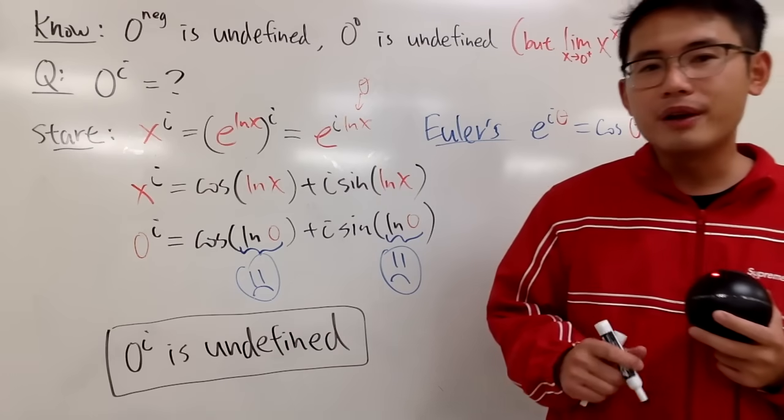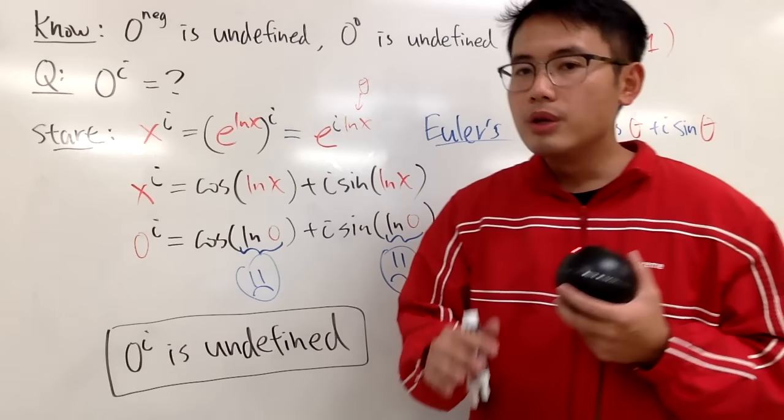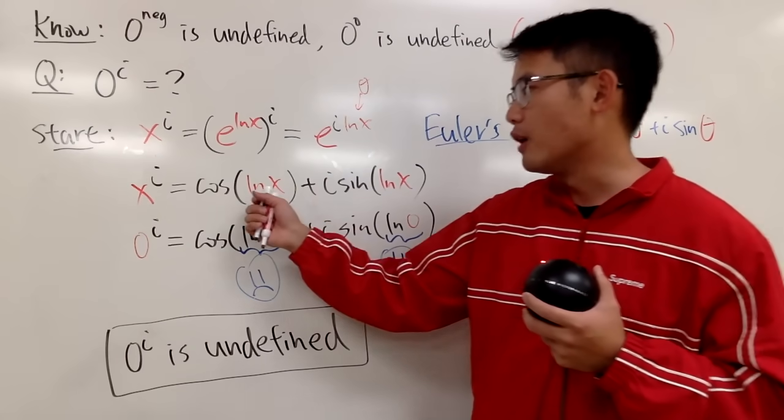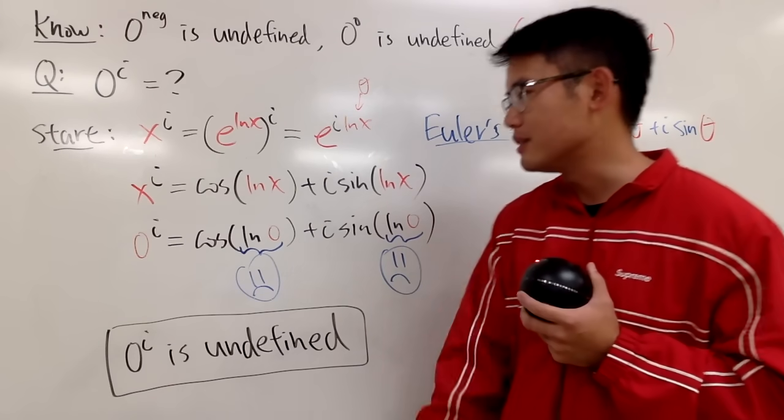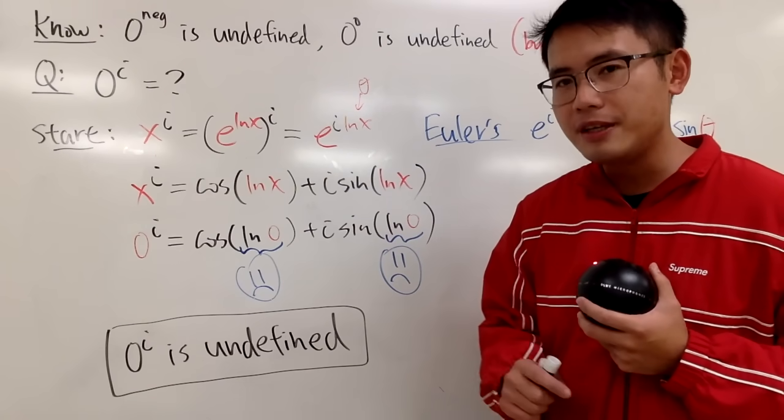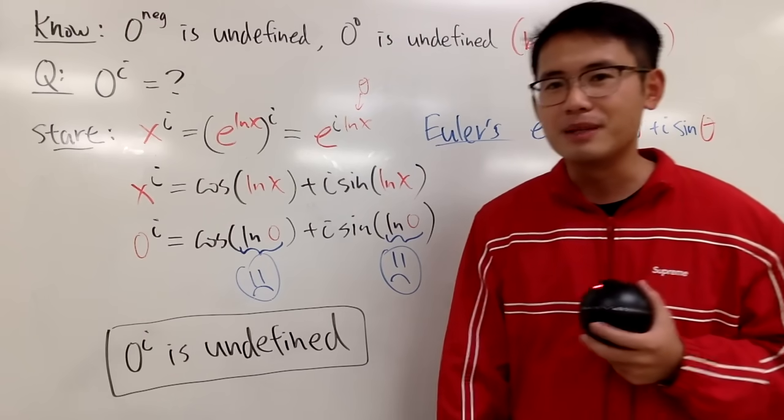And now you might be wondering, can I just take the limit as x approaching 0 plus? In that case, you can somehow make sense of ln of 0. In that case, that would be negative infinity, but the bad news is cosine of negative infinity, too bad, it doesn't have a limit. Likewise, sine of negative infinity doesn't have a limit.